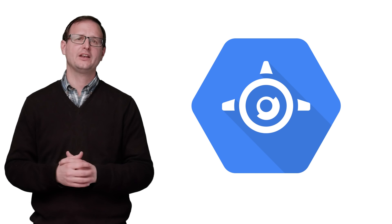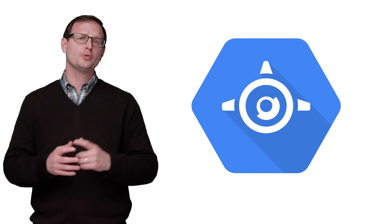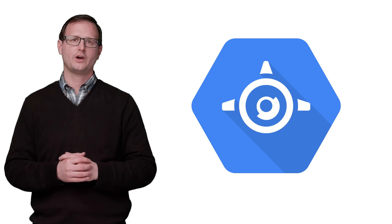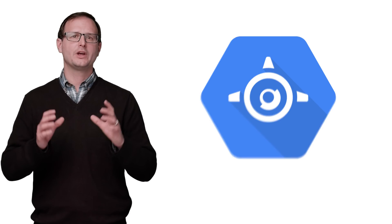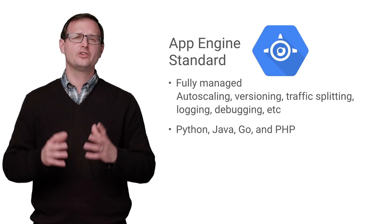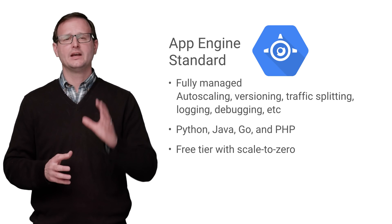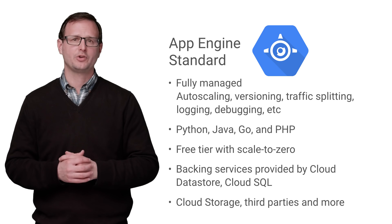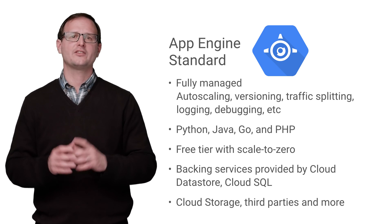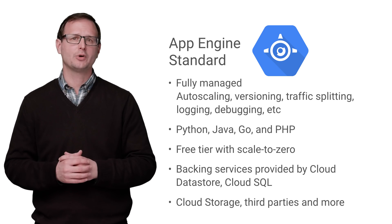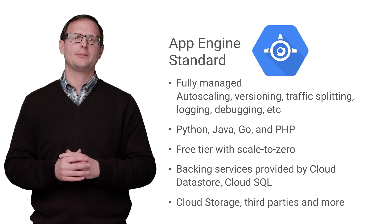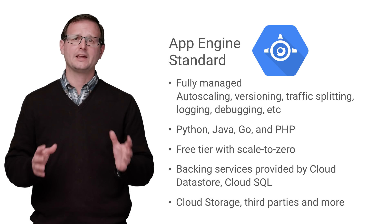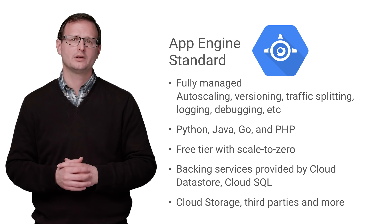App Engine Standard lets you serve static content and also provides server-side compute to interact with. We handle all the deployment, migration, regions, and scaling, and you get to focus on getting your app to users. GAE Standard has a flexible billing model and allows your app to scale down to zero instances, so you don't pay if no one's using it.